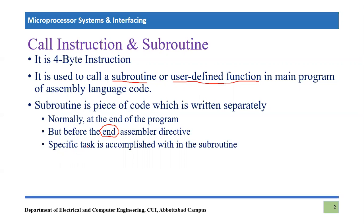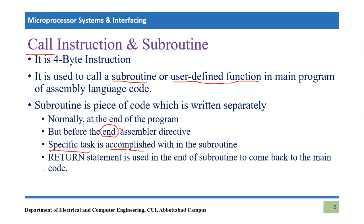A specific task is accomplished during the subroutine. We call this subroutine using the call instruction. That subroutine or user-defined function is written to perform certain specific tasks, and that specific task is accomplished whenever we call it. To call a subroutine using the call instruction, we simply write 'call' followed by the name of the subroutine we want to call. We will leave the main program, jump to the subroutine, perform the subroutine, and once that task is finished, we have to come back to the main code using another important instruction — the return instruction.